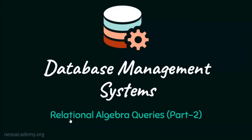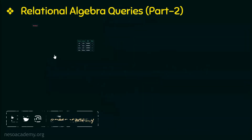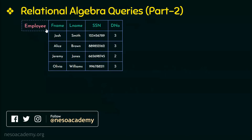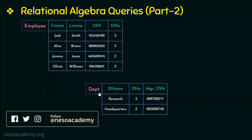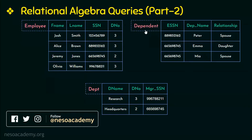Hello everyone and welcome back to part 2 of example queries based on relational algebra. For the examples we are going to discuss here, there are mainly three relations we are going to use: the employee relation having the employee details, the department relation having the details of each department and its manager, and lastly the dependent relation having the details of the dependents of the employees.